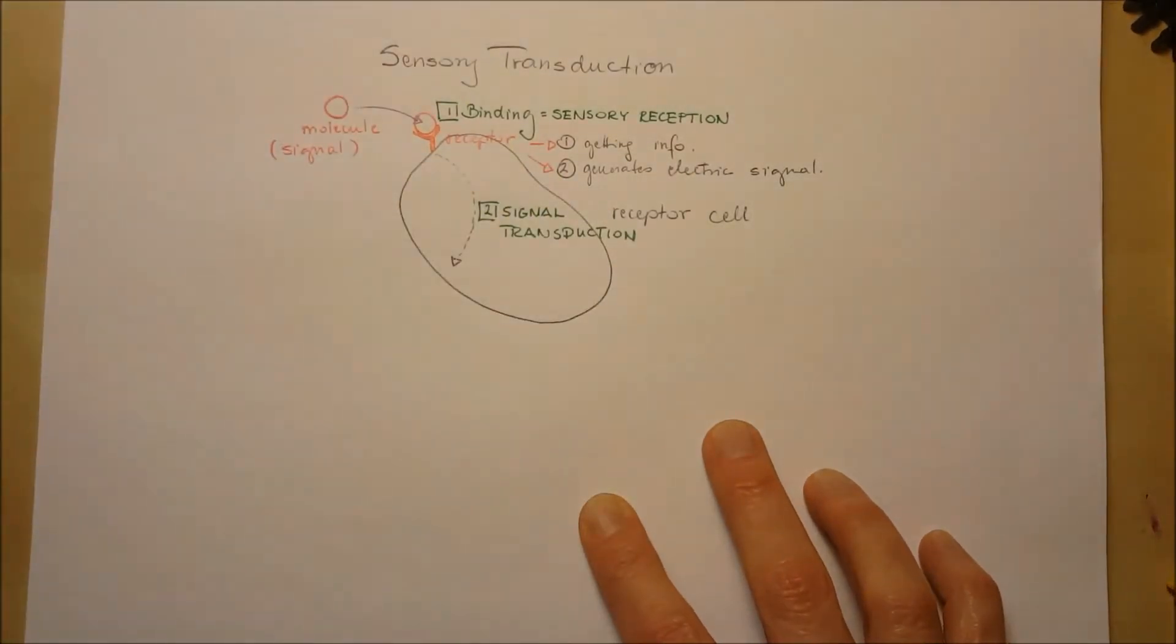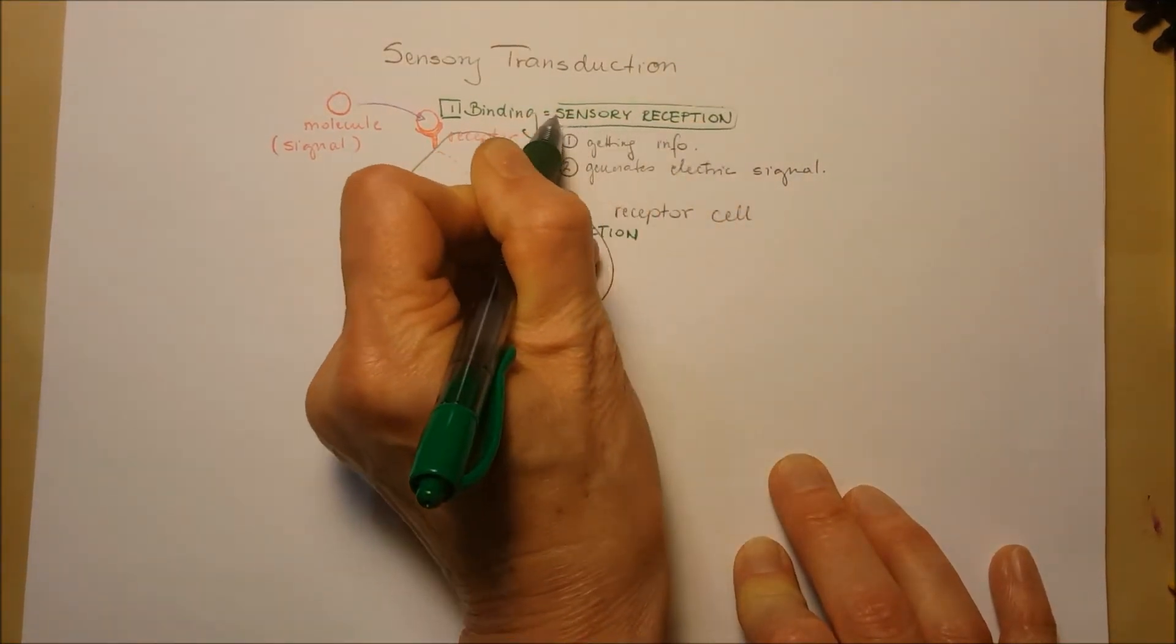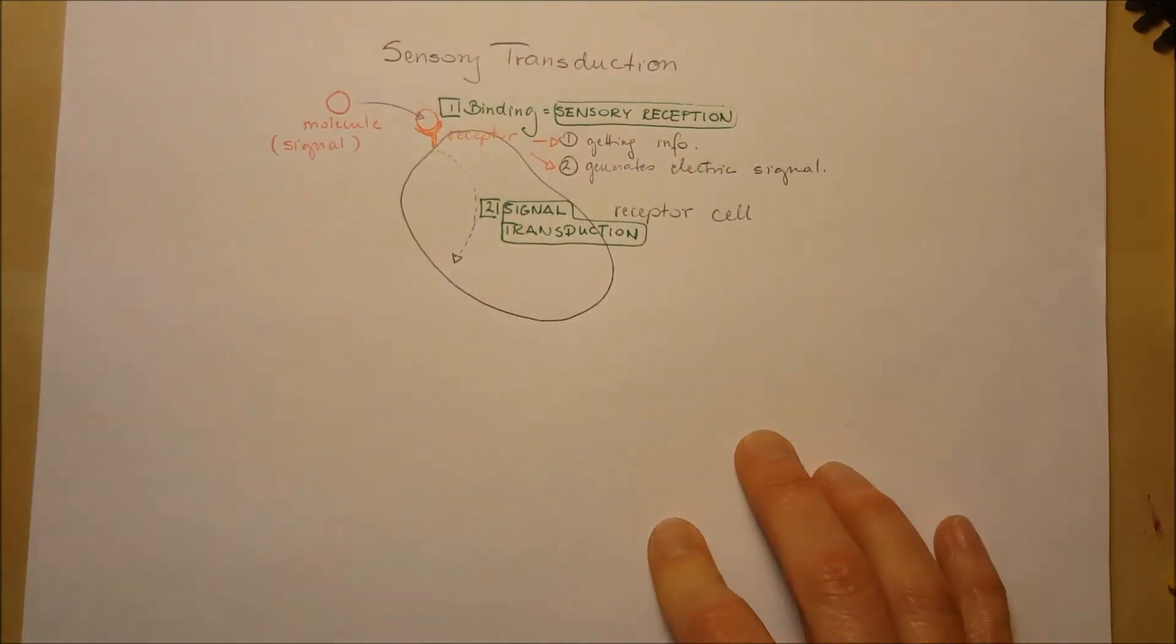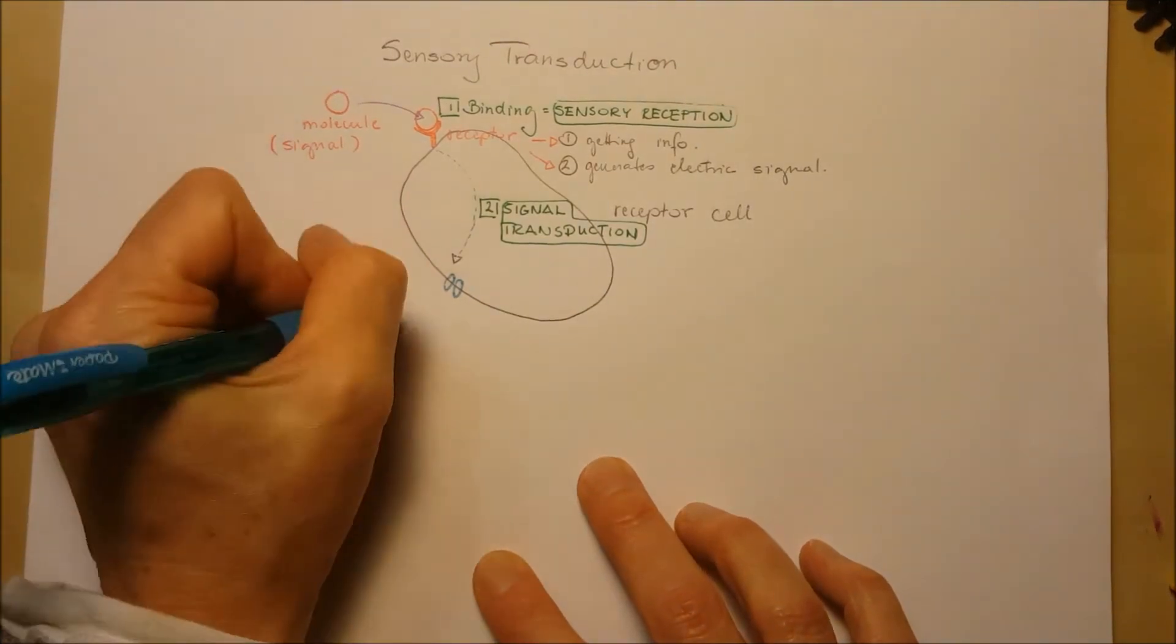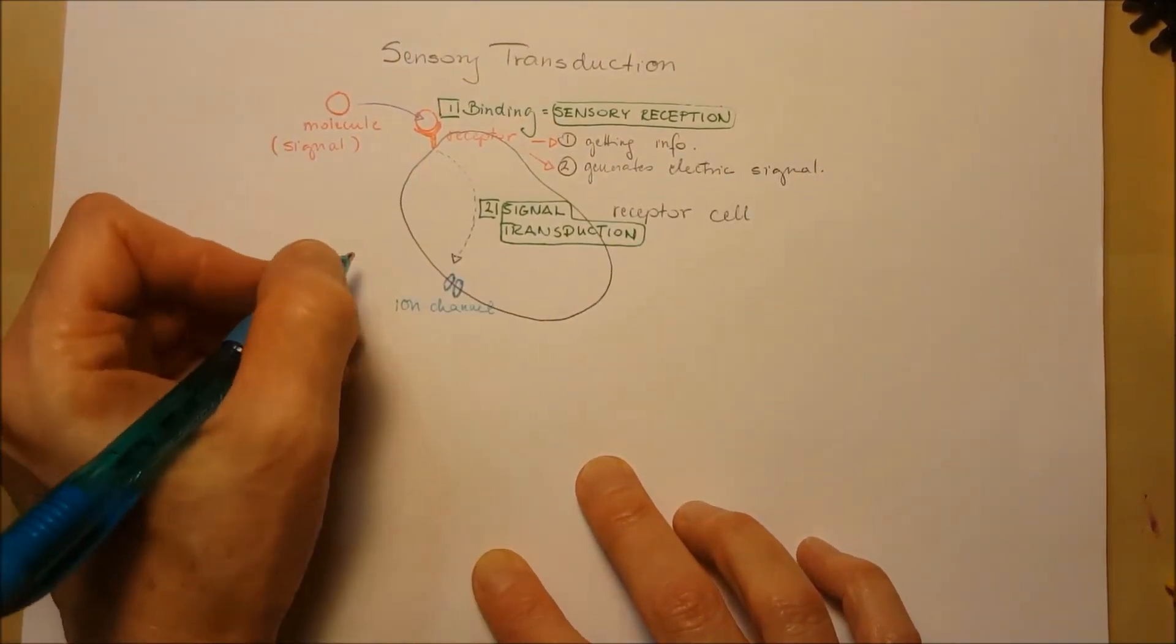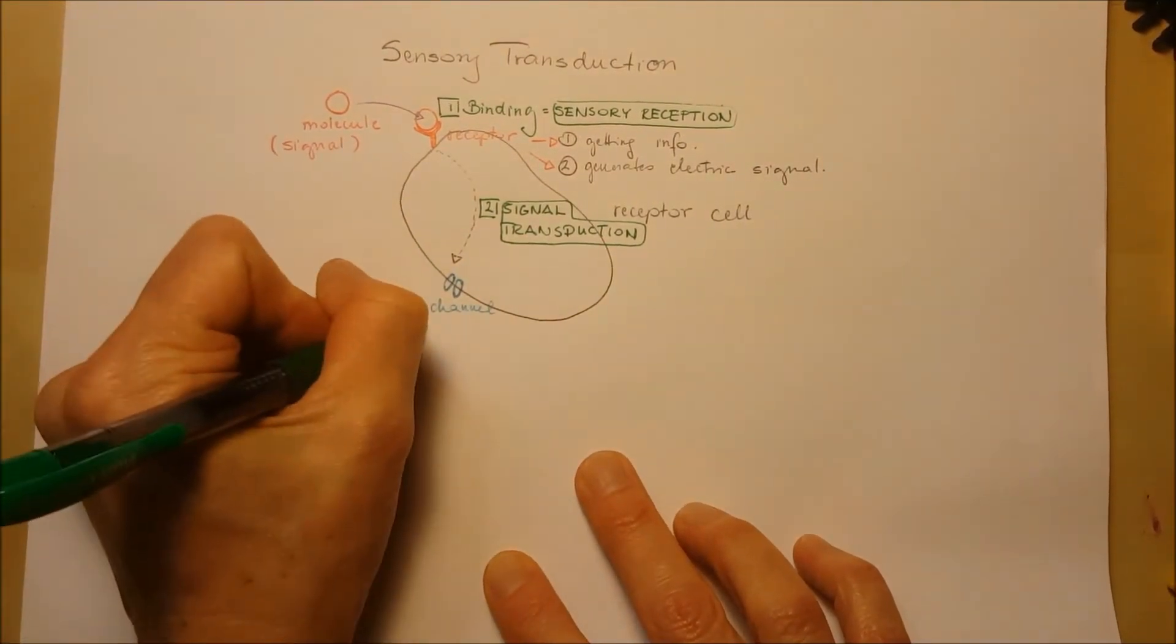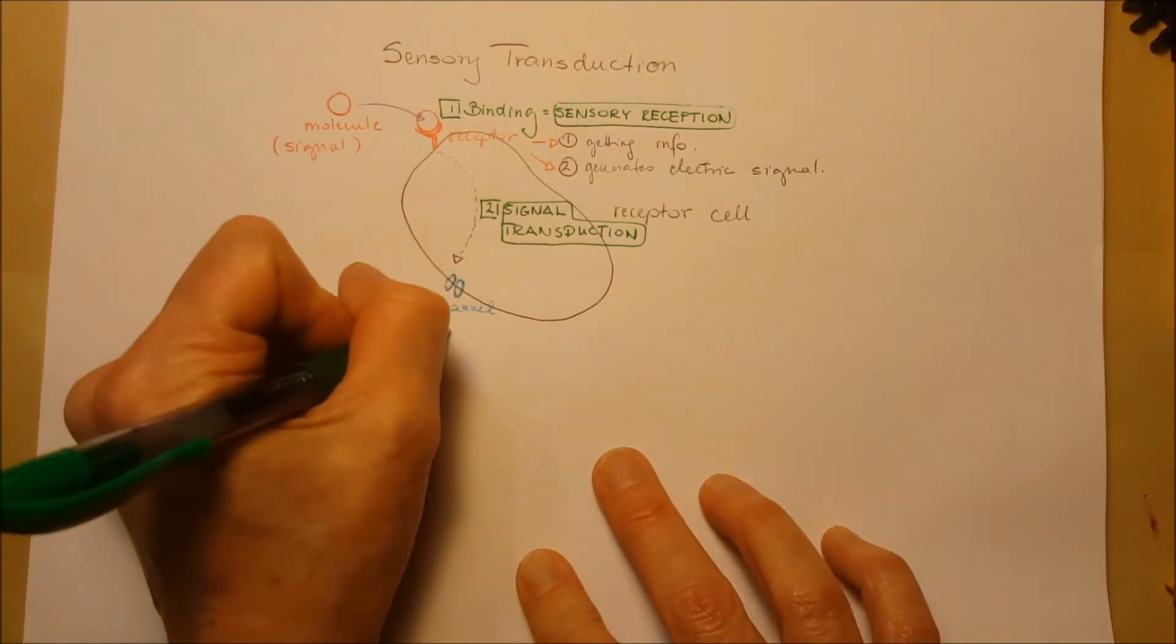Molecules after molecules will get activated until we reach an ion channel. The ion channel is going to be open and after that going to be closed. And the ions from the outside, they are going to zoom into the receptor cell.